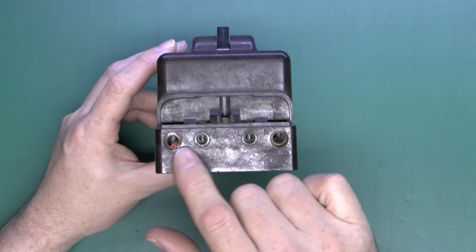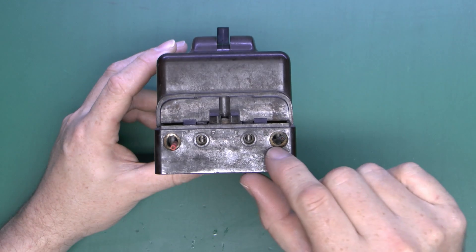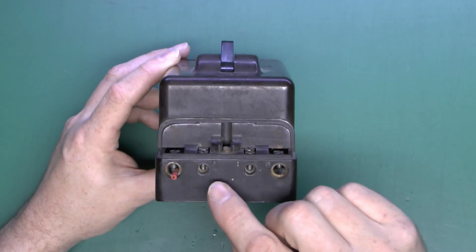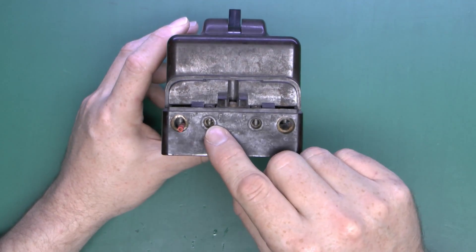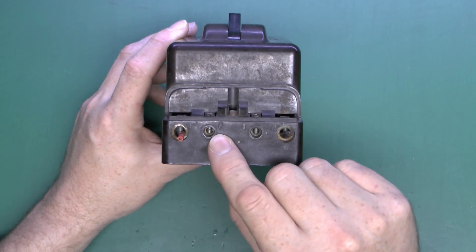We've got the two terminals here, though this one's actually marked P for phase, and of course neutral over there. Then in the center here we've got the two terminals which would be for the earthing rod and the installation itself.